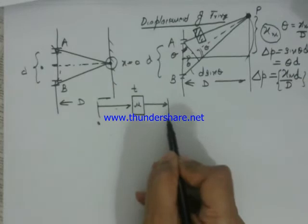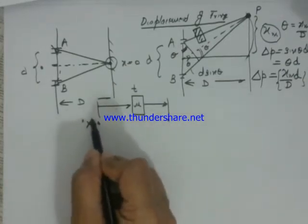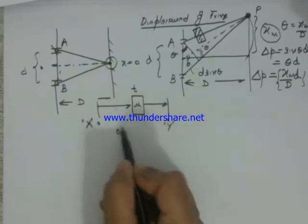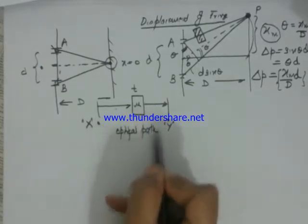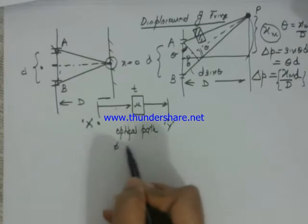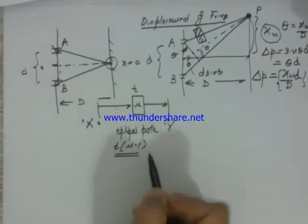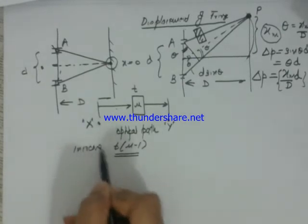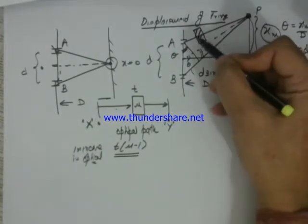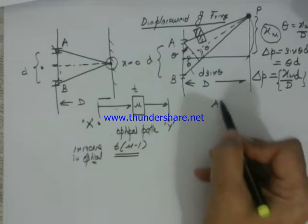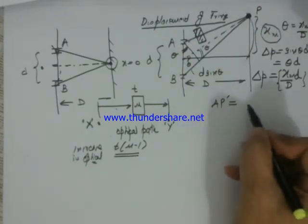We know that when light passes through any material having refractive index mu and thickness t, for these two end points, say x and y being the same, the optical path increases by t times mu minus 1. This is the increase in optical path.